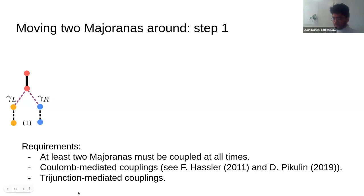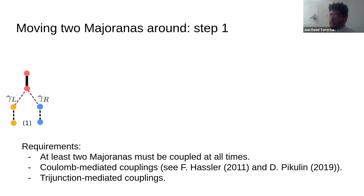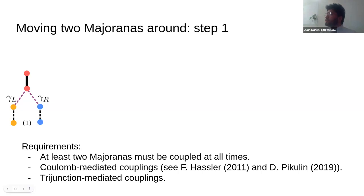The braiding protocol considers three pairs of Majoranas. The first requirement is that the degeneracy must be protected — meaning at least two Majoranas must be coupled at all times. We need Coulomb-mediated couplings within the same wire by attaching a transmon qubit to the top wire, and also trijunction-mediated couplings, shown as purple lines that couple Majoranas in the trijunction. The first step of braiding is turning on a coupling that pairs three Majoranas simultaneously.